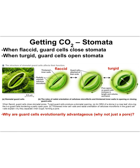Stomata and guard cells are some of the most fascinating structures in plants, and I would argue in all of biology. Stomata — the holes — can actually be opened and closed based on the status of the guard cells. Guard cells can change shape depending on whether they are flaccid (without much water) or turgid (filled with water).